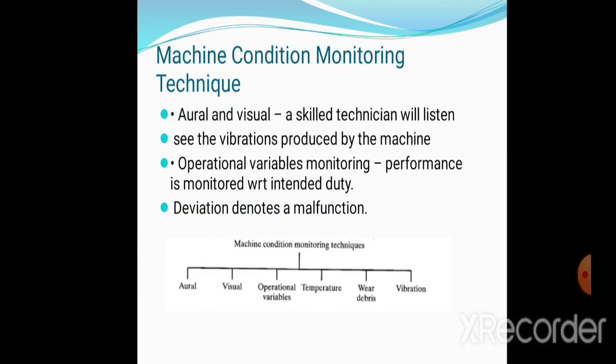What condition monitoring techniques are available? Aural visual, operational variables like temperature, wear rate, and vibrations. Aural visual means audio-visual by videos. Operational variables are parameters like temperature, wear, and friction. From these values, we get an idea about the condition of the machines.